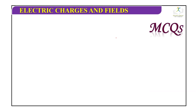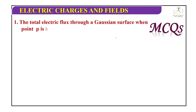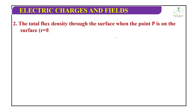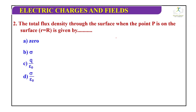Practice MCQ questions: Question 1 — The total electric flux through a Gaussian surface when point P is inside the spherical shell is given by? The correct answer is option A, which is zero. Question 2 — The total electric flux through a Gaussian surface when point P is on the surface (R equals capital R) is given by — 0, sigma, Q by epsilon naught, or sigma by epsilon naught? The correct answer is option D.